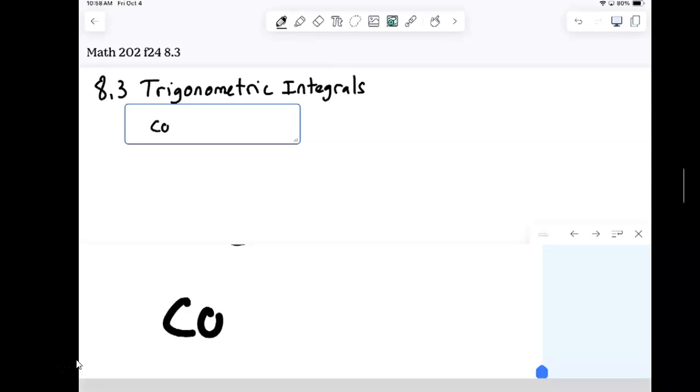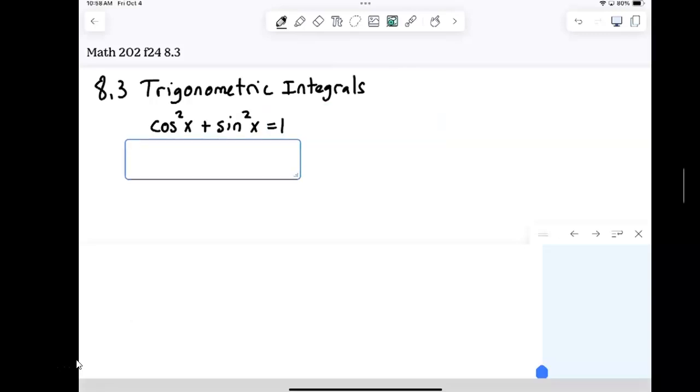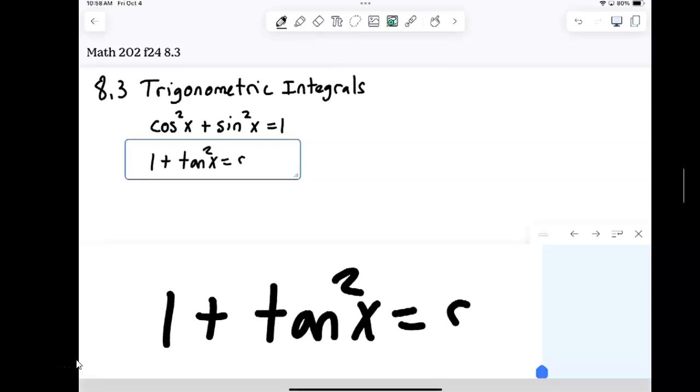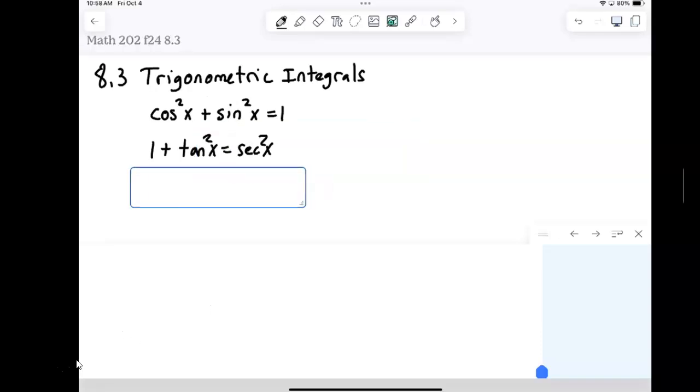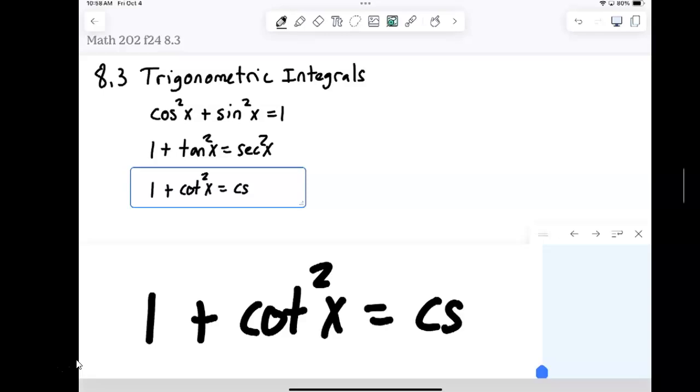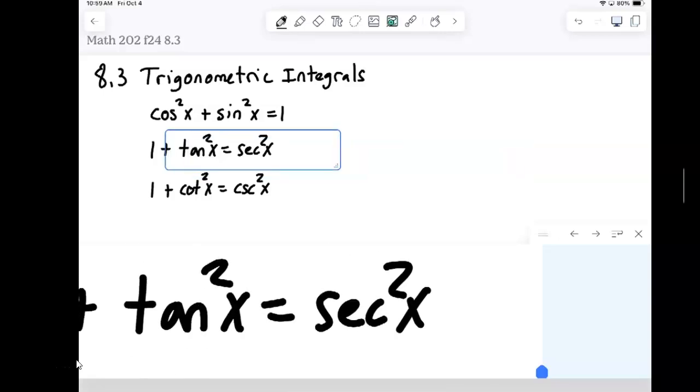Specifically, those are your standard identity that everybody really hopefully knows at this point. That is that cosine squared plus sine squared equals one. We also have one plus tangent squared equals secant squared and one plus cotangent squared equals cosecant squared. Those are the two that you're a little less familiar with. Those are actually going to be important here now. We need them.